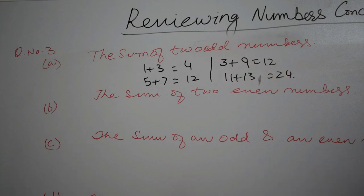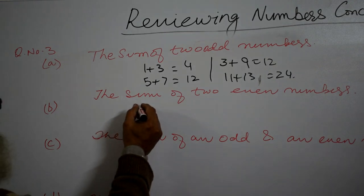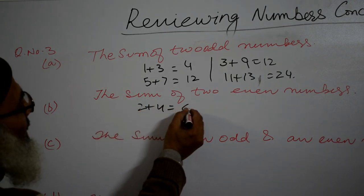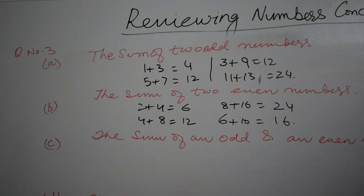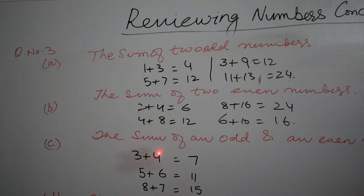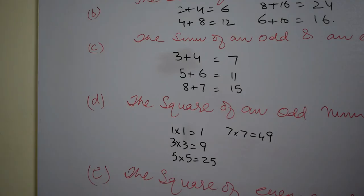Now proceed to question number B. The sum of two even numbers should be an even number. 2 plus 4 is 6. Dear students, here we are getting all even numbers again. If we are adding two even numbers the outcome is always even. Then the sum of an odd and an even number. Students, you see here if we add an odd number with an even number the outcome is odd. Here again odd, here again odd, here again odd.